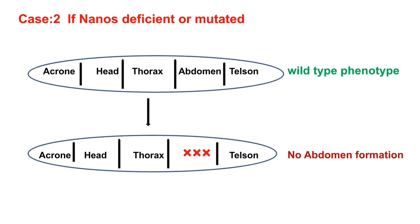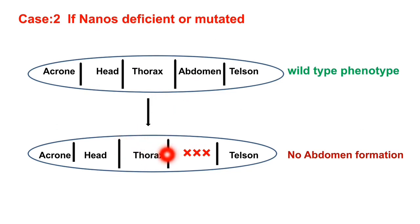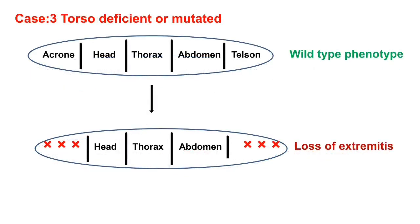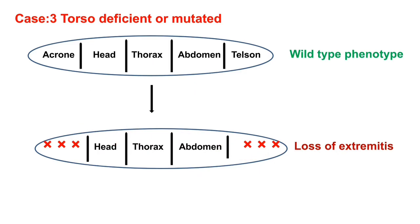In the nanos mutation case, the wild-type embryo shows normal positioning of all structures. If nanos becomes mutated, it results in lack of abdomen, since nanos is responsible for abdominal region formation. In the torso mutation case, the wild-type embryo is normal, but the mutant shows loss of extreme structures because torso is responsible for extreme structure formation.